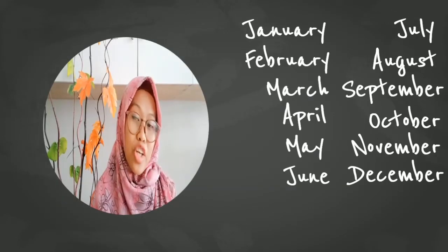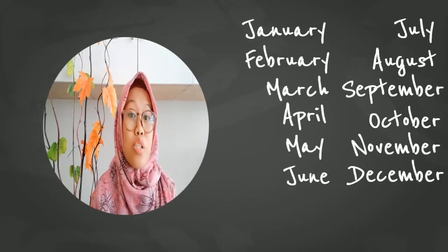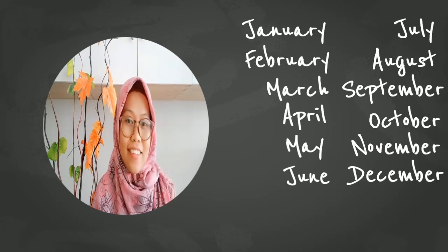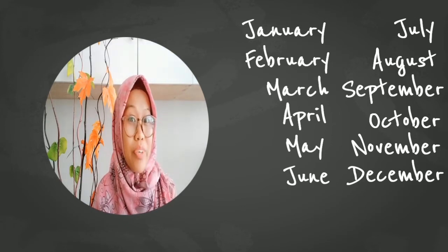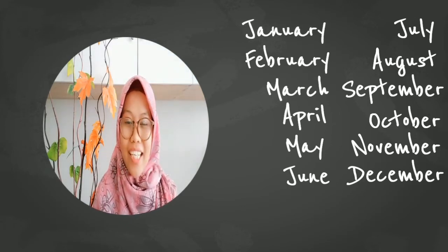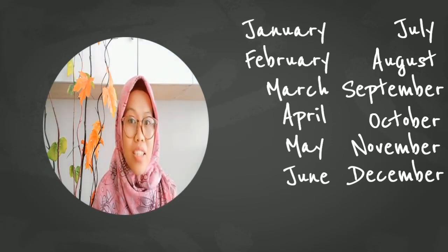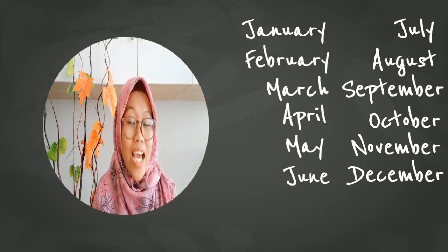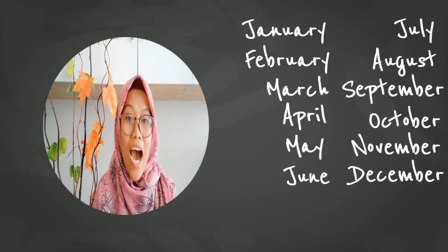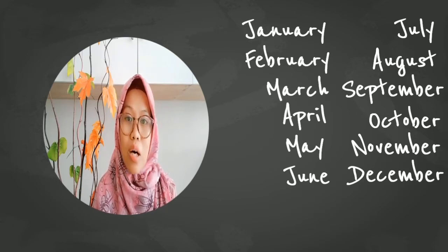In a year, there are 12 months. January, February, March, April, May, June, July, August, September, October, November, and December.